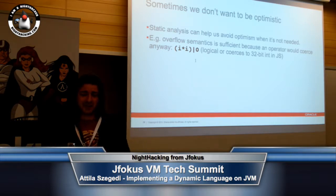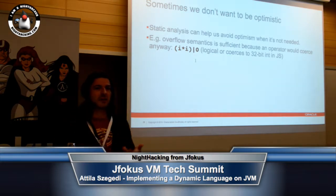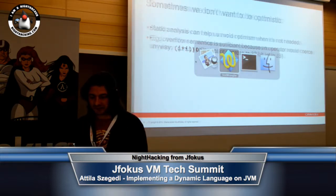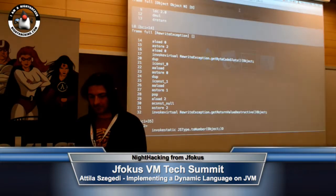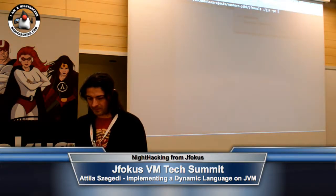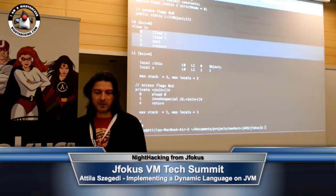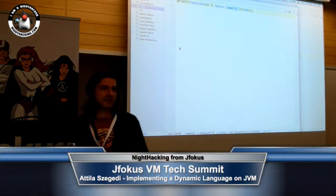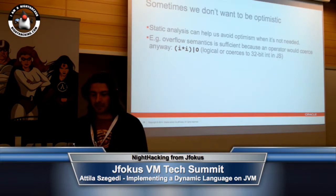Sometimes you don't want to be optimistic — static analysis helps a lot with this. So if we just multiply two numbers but we know that the result will be coerced into an int, then why bother? We just take the ints, we just do iMul, and then we don't worry about it. So if I just have a function and I do this, then it just ends up being an iload, iload, iMul, ireturn — it cannot get easier than that. This is because it knows that the OR operator coerces its result into an int anyway. You don't even have to do any guards for the optimization.